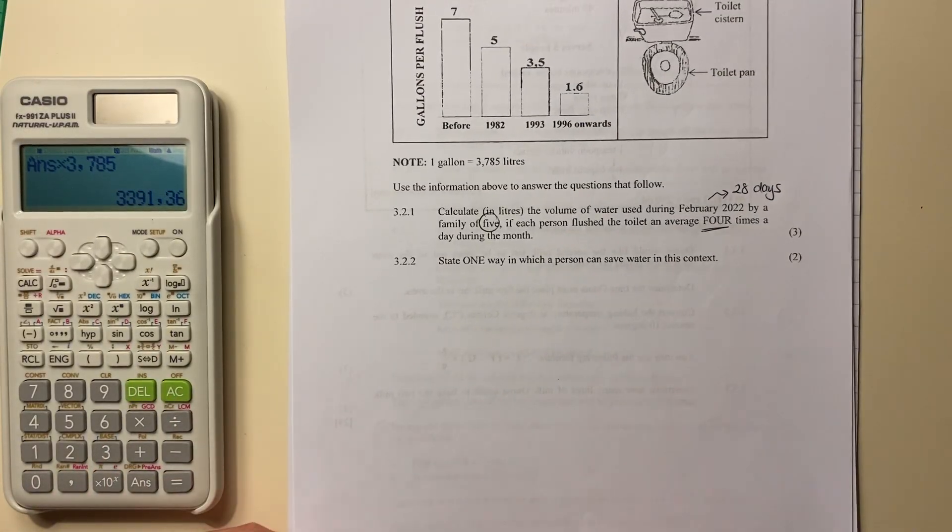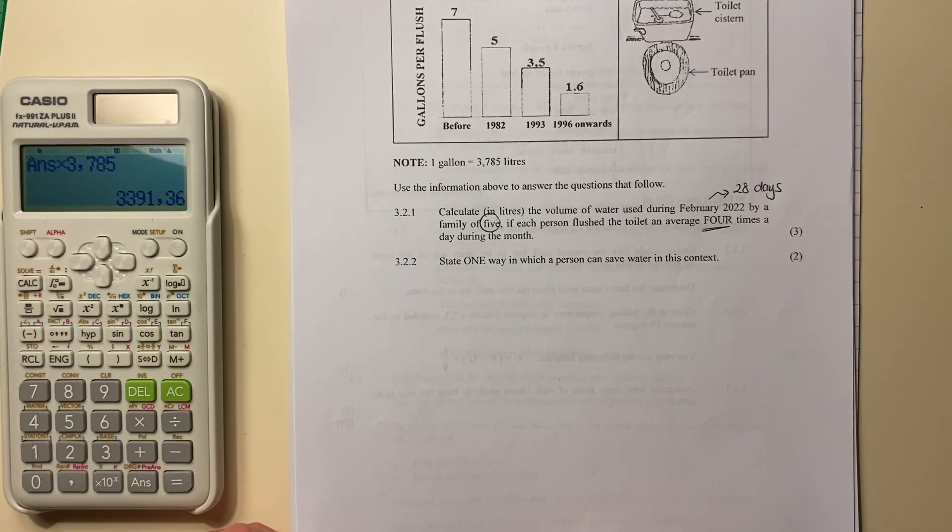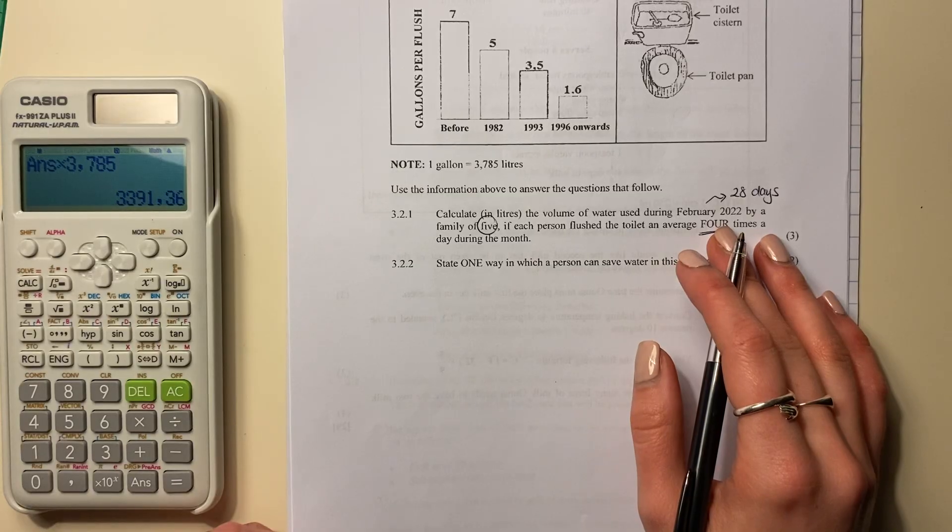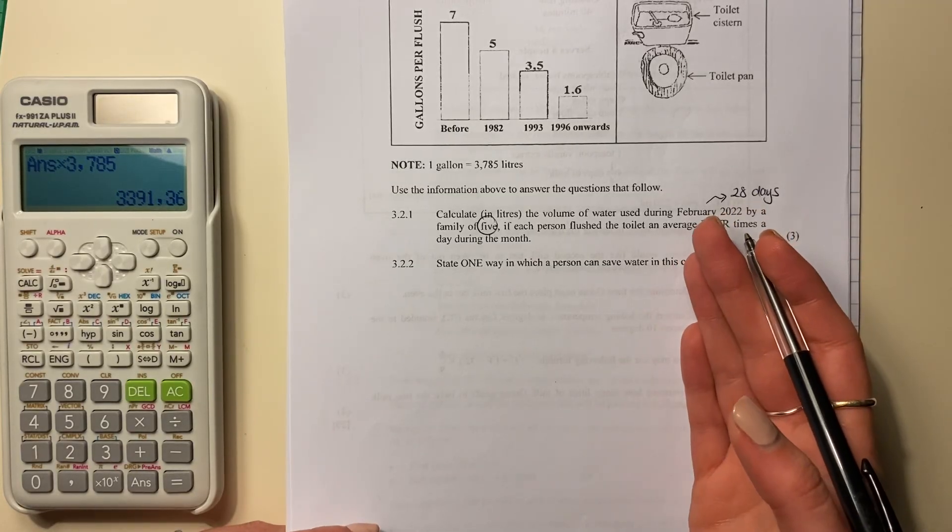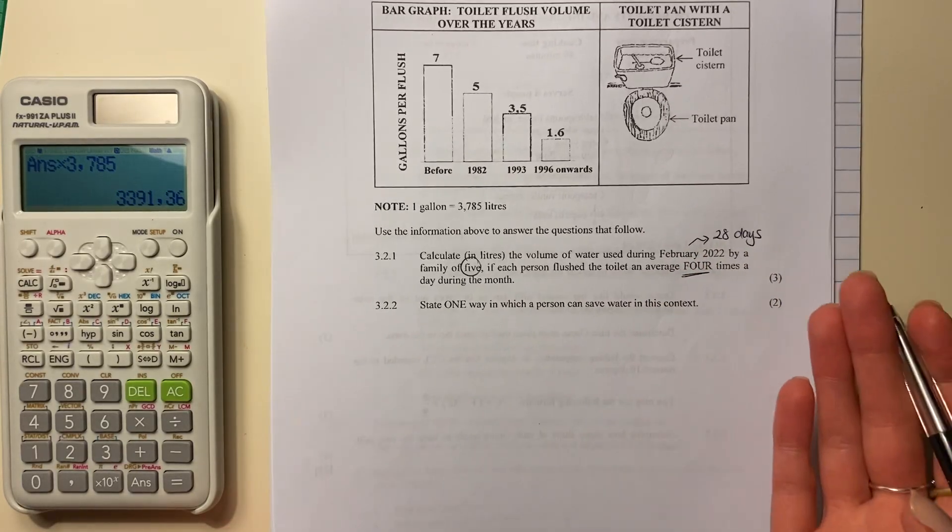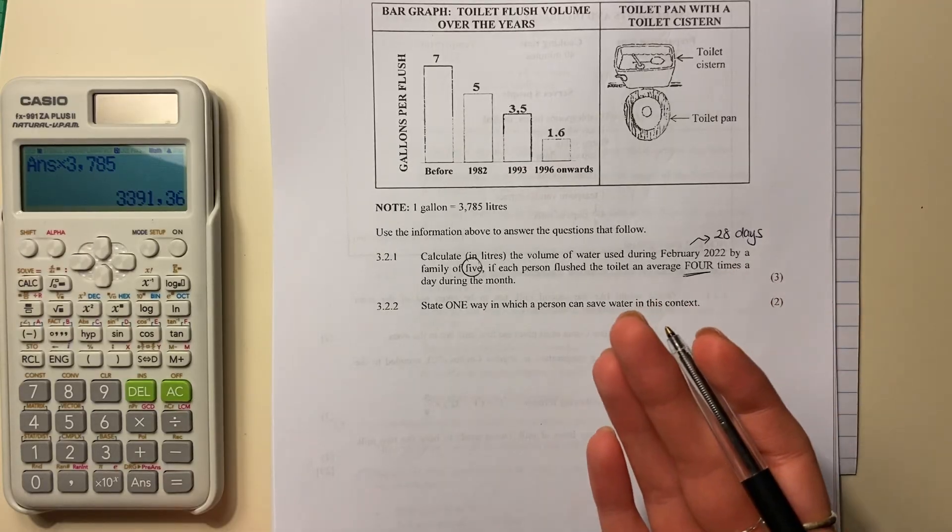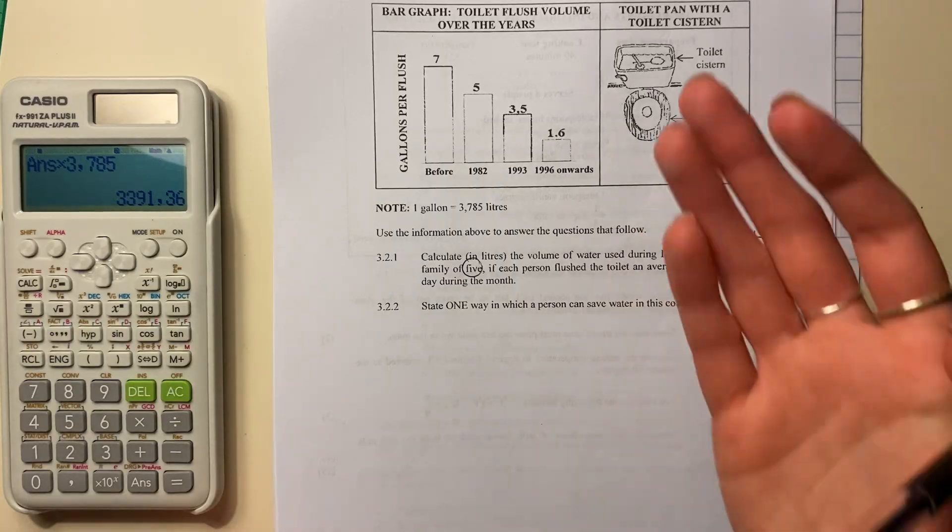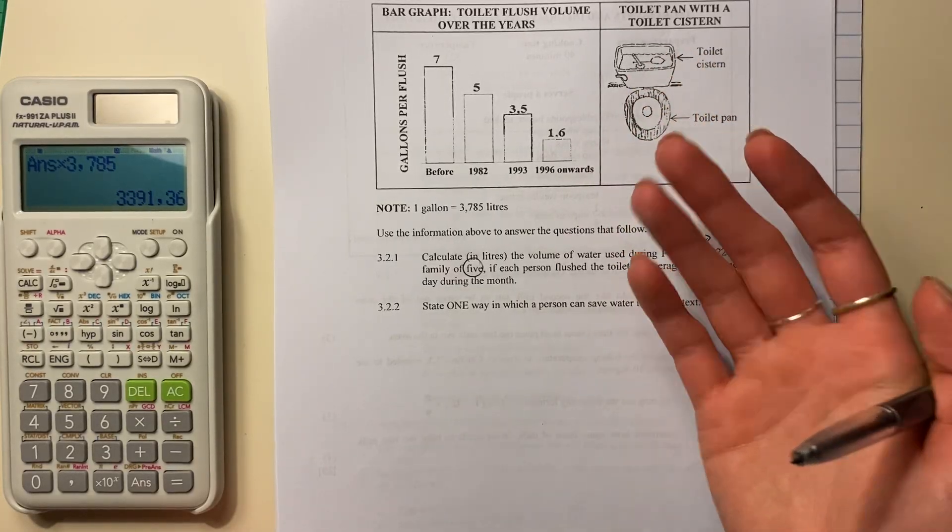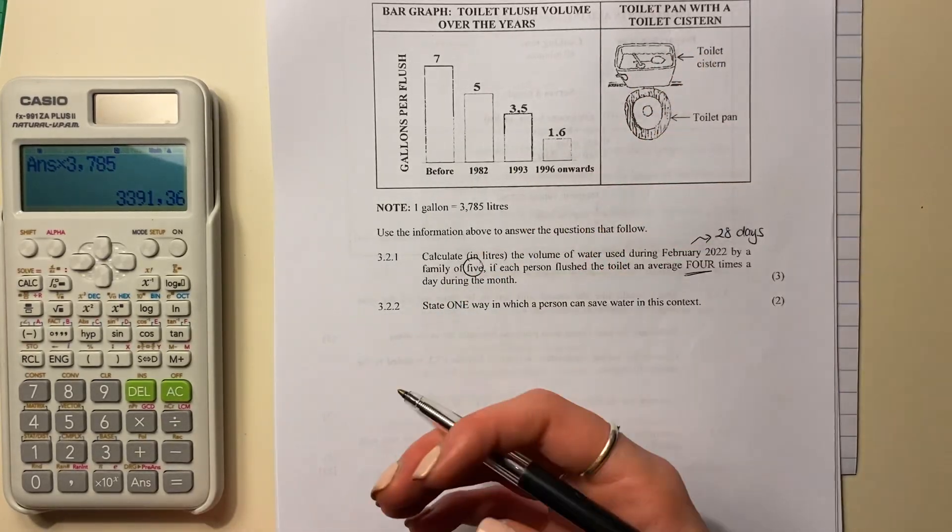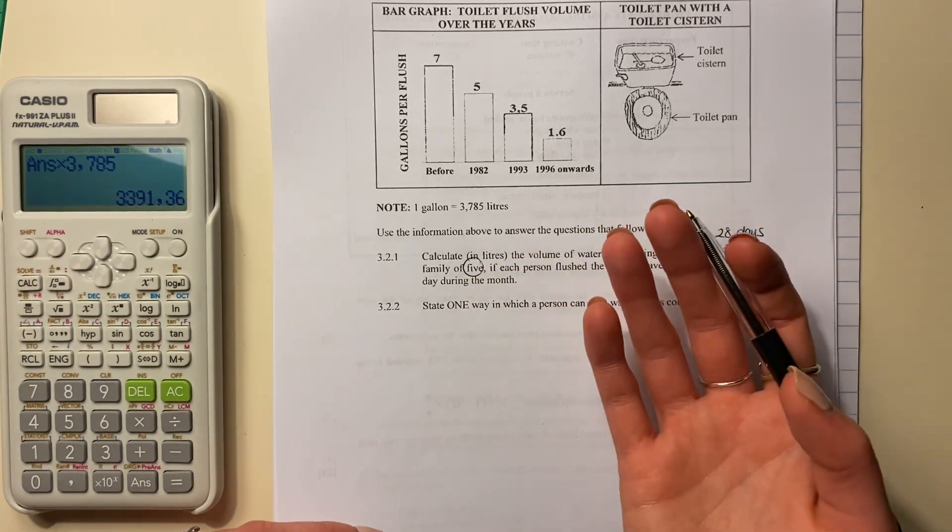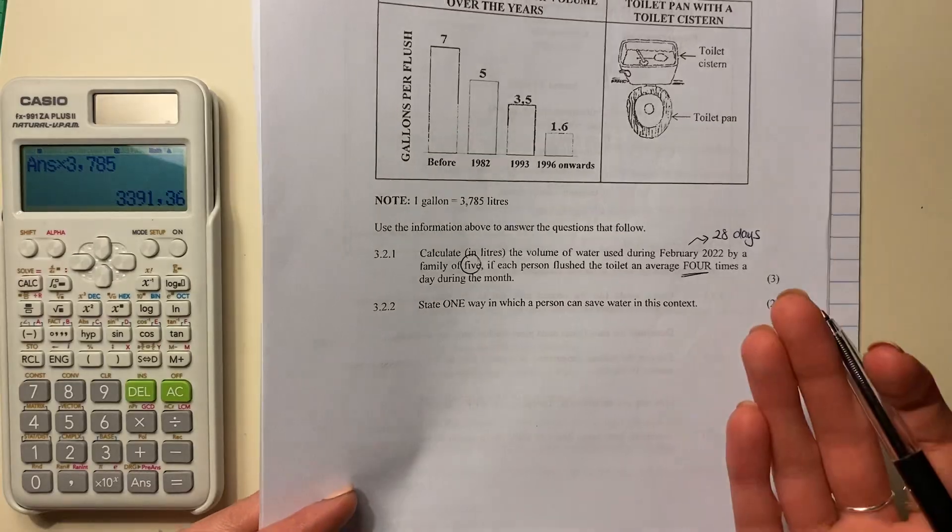It says, state one way in which a person can save water in this context. So it's basically saying, this is what's happening. We're in 2022. How can you save water? Now, I don't know if you know this. This is kind of like a common sense thing. You can reduce the water flowing to the cistern to use less water. You can put a brick in the cistern, right? Because that means that there's less space for water. You can look at getting like a newer model of a toilet, which is more water efficient. So you can say anything like that.